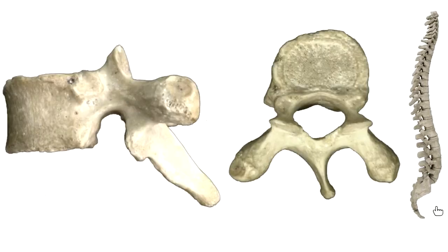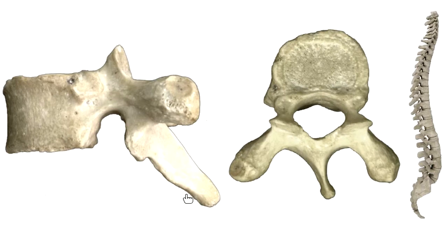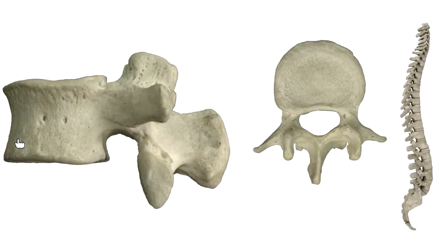Thoracic vertebrae are identified by their spinous process hanging down below the body — a telltale sign. I tell students it looks like a giraffe face from the side — giraffic is thoracic. Lumbar vertebrae have a big fat body and a more ornate, blunt-nosed appearance — like a moose. They are at the bottom of the vertebral column, bearing the most weight, so they have the largest body.